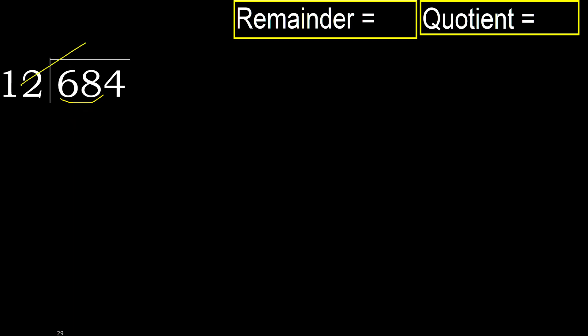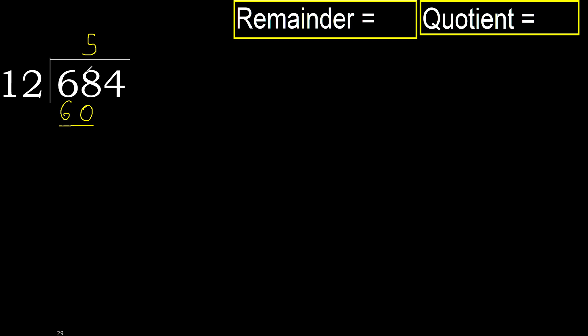12 multiplied by which number is nearest to 68 but not greater? 12 multiplied by 7 is 84, is greater. Multiplied by 6 is 72, is greater. Multiplied by 5 is 60, is not greater. Subtract.